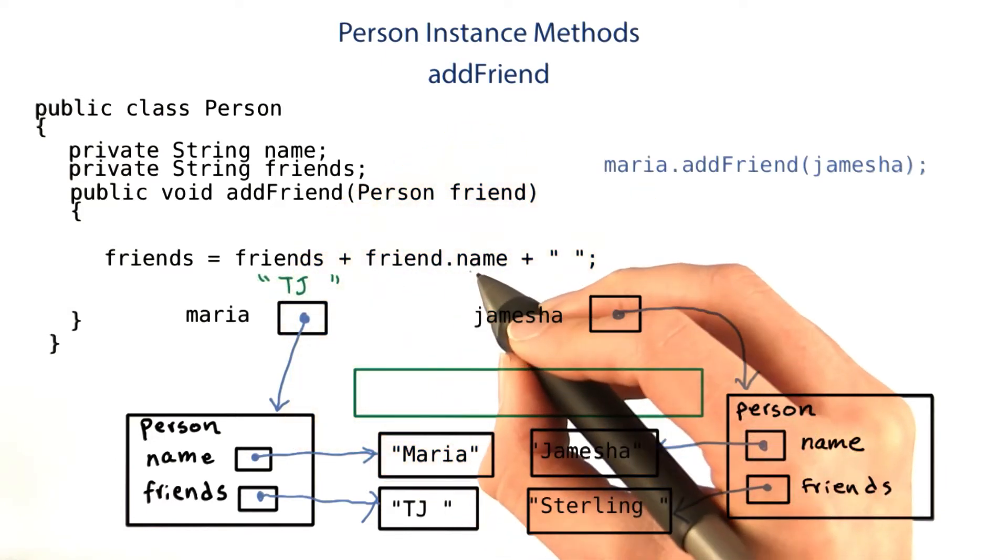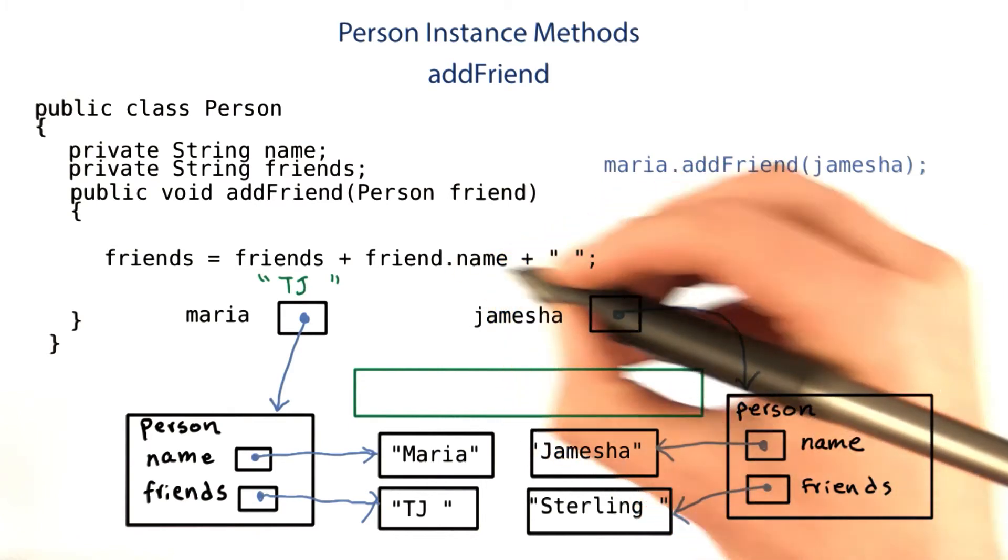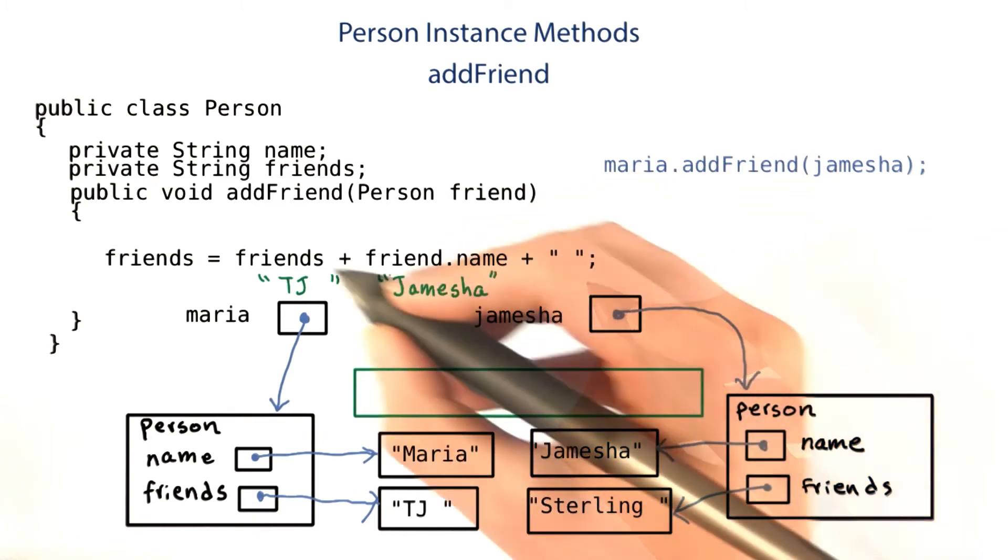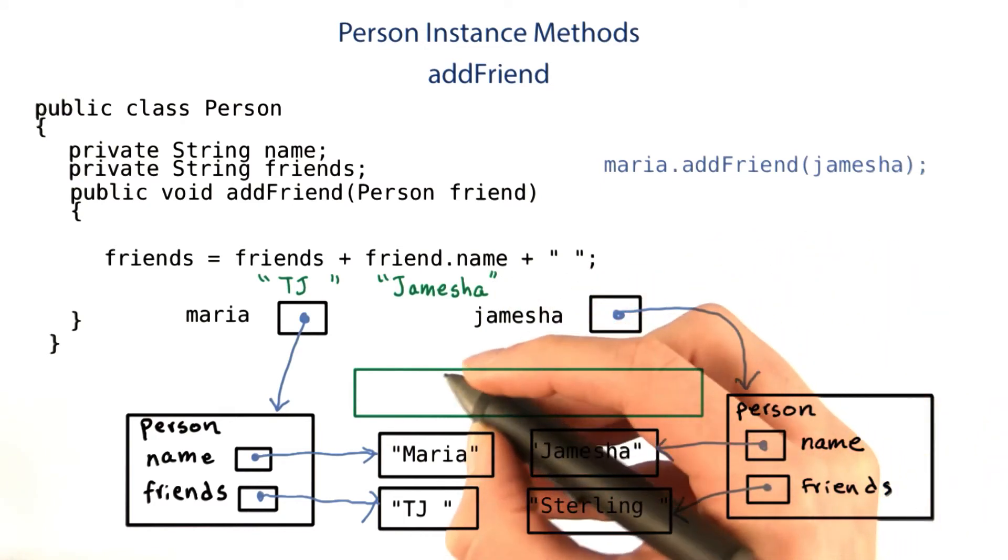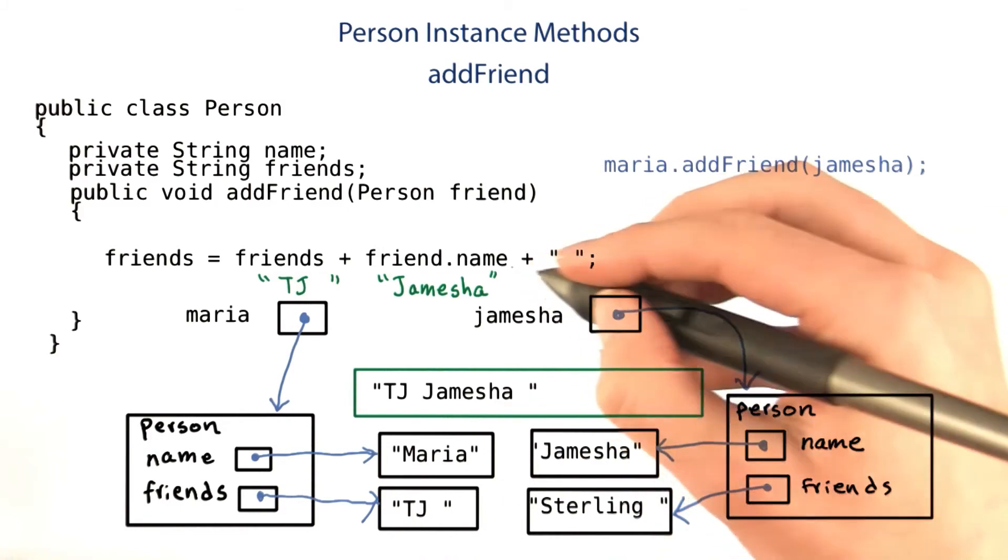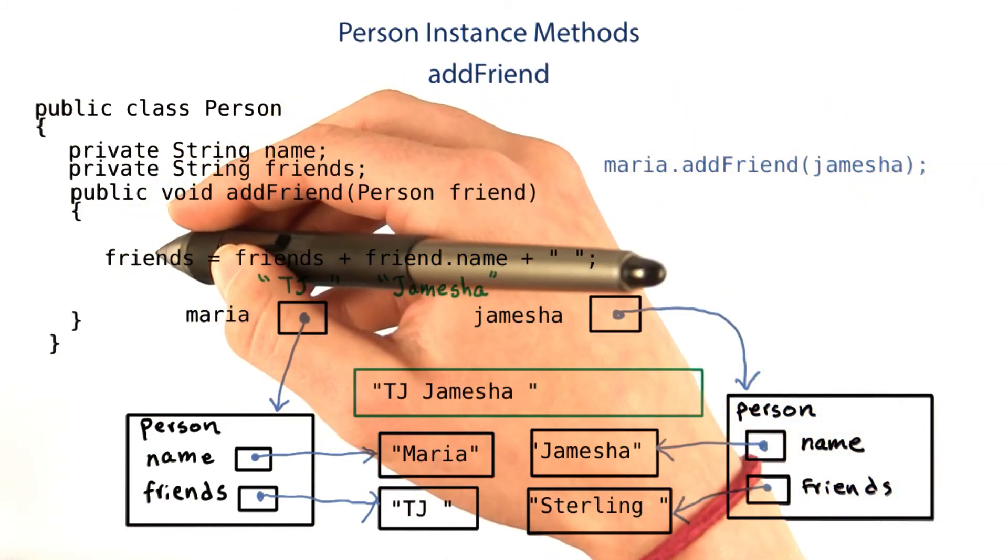Friend.name is the friend, the argument, which was the Jameesha object.name, which is Jameesha. And the space is just a space. So when these strings get put together, it'll look like TJ space Jameesha space. Now the string created by this part will be assigned into the friends variable.